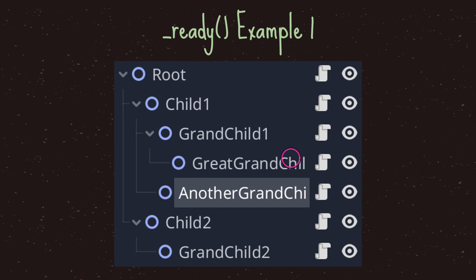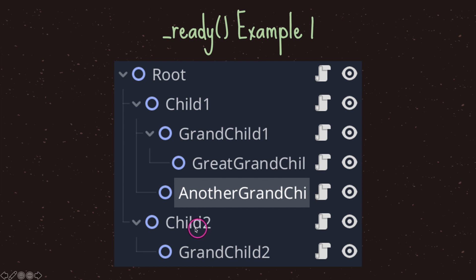The most important thing to note is that everything under the first child has the number one appended at the end. The second child only has one child called grandchild two, and everything on that side has the number two.